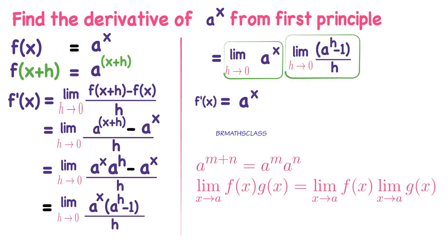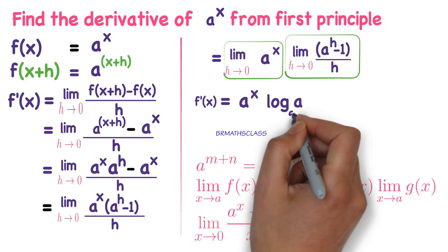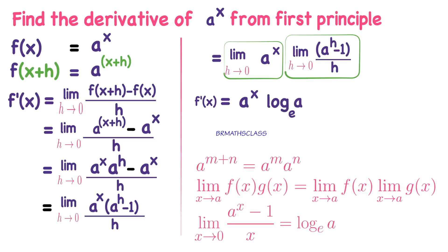Now we have a formula in limits chapter. Limit x tends to 0, a power x minus 1 divided by x equal to log a base e. In place of x here h is there. So f dash of x is a power x into log a base e. From now onwards we take this as a formula, derivative of a power x is a power x into log a base e.